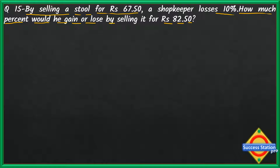First, let's read part one: by selling a stool for rupees 67.50, a shopkeeper loses 10%. Let's write what is given. Selling price is equal to 67.50, that is ₹67.50. And loss percent is 10%. The formula for selling price when loss percent is given: selling price is equal to 100 minus loss percent of cost price.